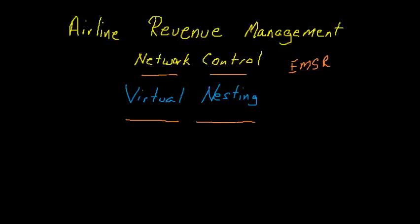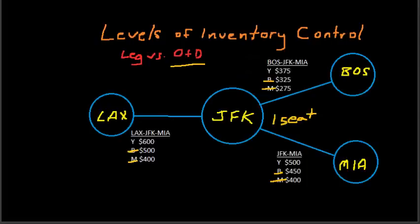Let me take a minute to review the difference between leg-level and network-level or O&D level control and why airlines can benefit from moving from leg-level to O&D. This is a screenshot of a video I did on levels of inventory control, and I illustrated the difference between leg and O&D control by creating this very small network and then a set of itinerary fares.